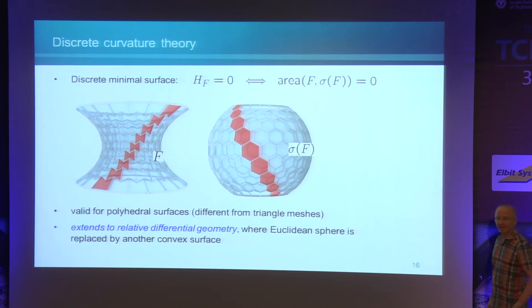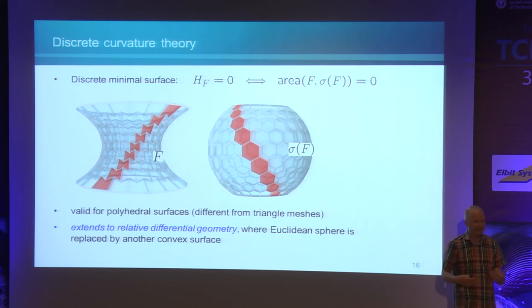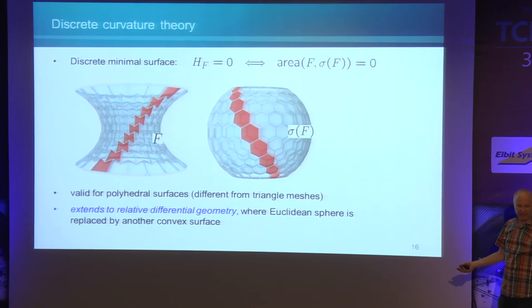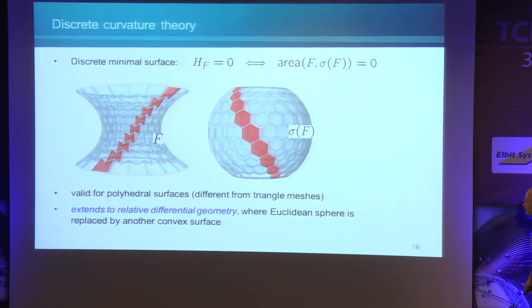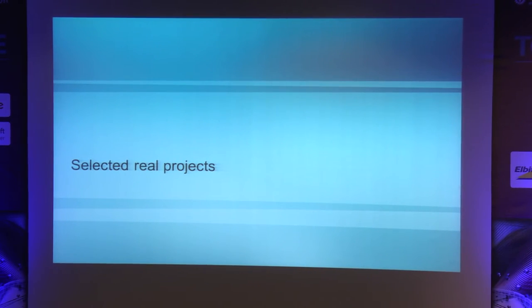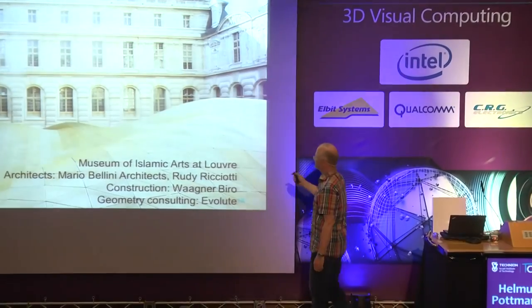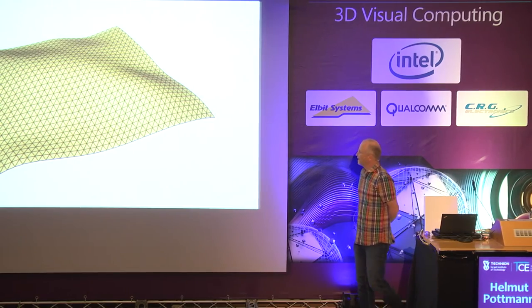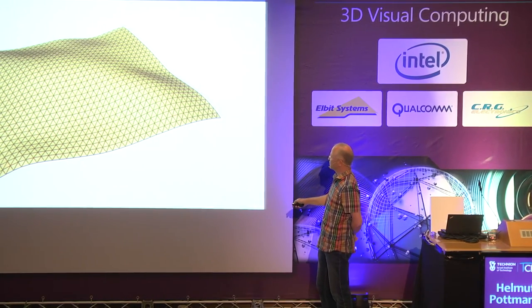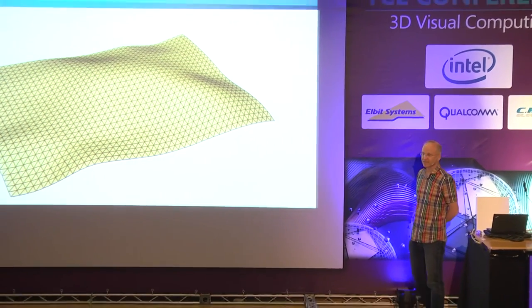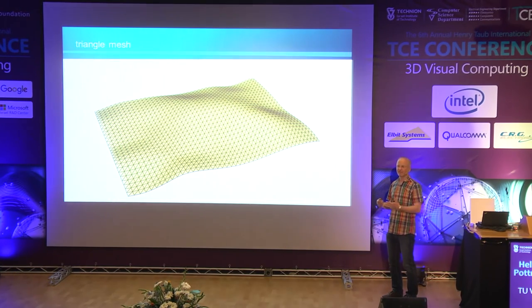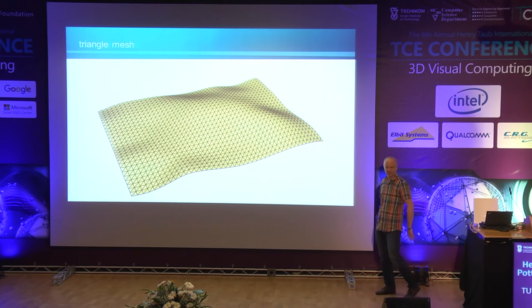This extends to relative differential geometry, where we replace the Euclidean sphere by some other convex surface — we will use a paraboloid later. Now for some real projects: in Paris at the Louvre there is a Museum of Islamic Arts. The original design was a roof expressed as a triangle mesh, to be built as a steel-glass construction. The steel company Wagner Bureau in Vienna asked us whether we could come up with a quad mesh to save material.